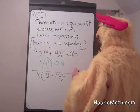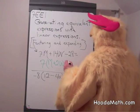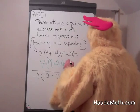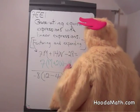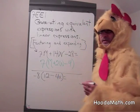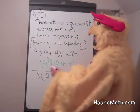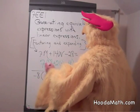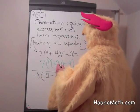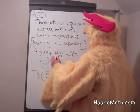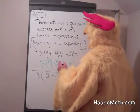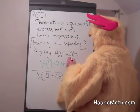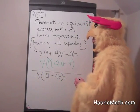And finally, 7 into negative 28 is negative 4. To check that we did it right: 7 times m is 7m, 7 times 2w is 14w, and 7 times negative 4 is negative 28.